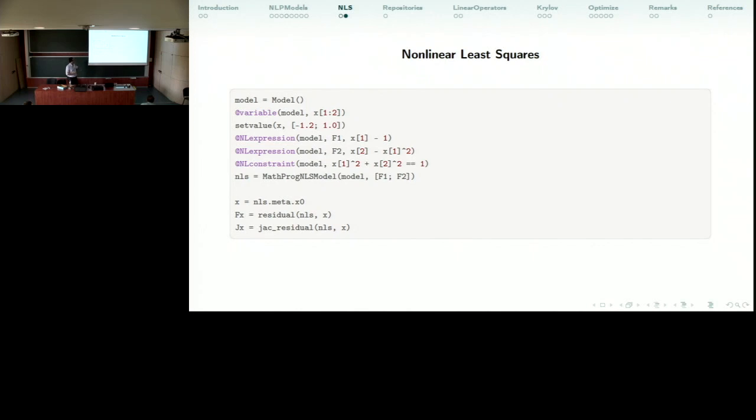Here is a way to create it using JuMP. You define the model and some NL expressions which you'll name, and you pass them to the MathProgNLSModel. This way you can just use the regular JuMP with a few extra steps to create a nonlinear least squares problem.